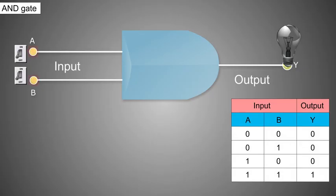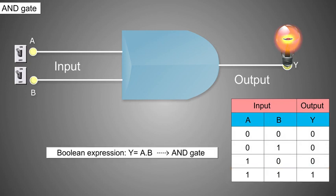The AND gate has two or more inputs and one output. The output of the AND gate is 1 only when both input A and input B are 1. The boolean expression Y = A · B represents the AND gate.